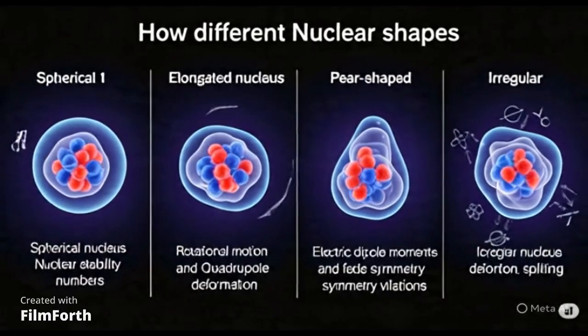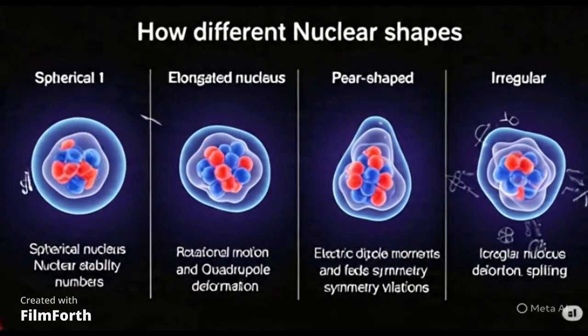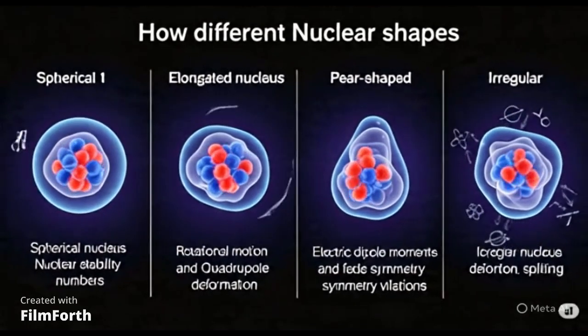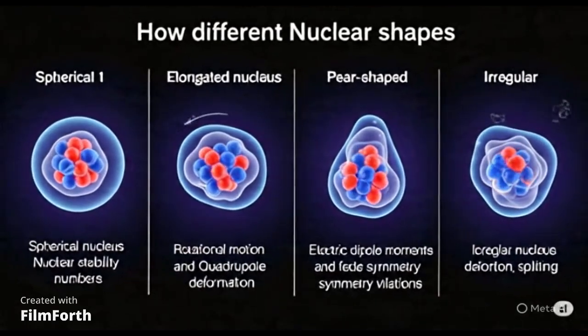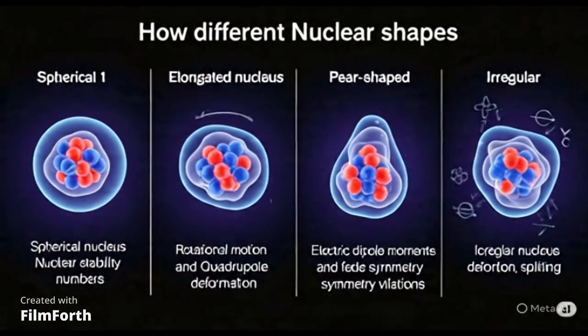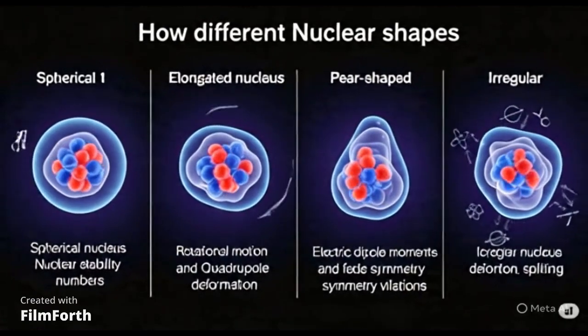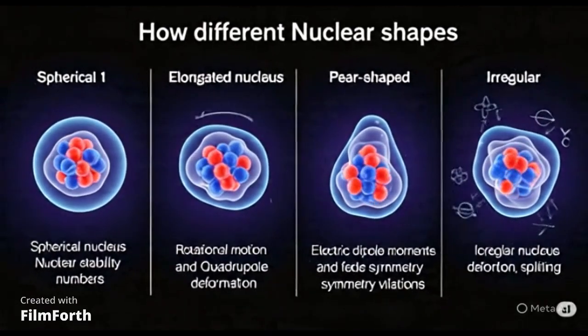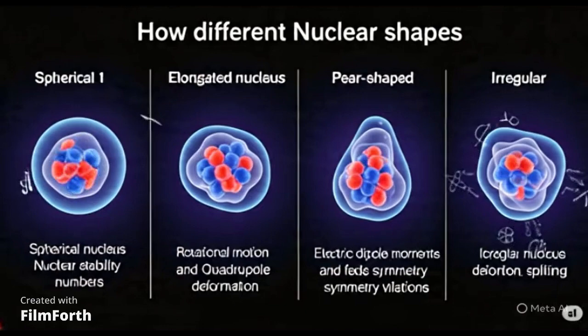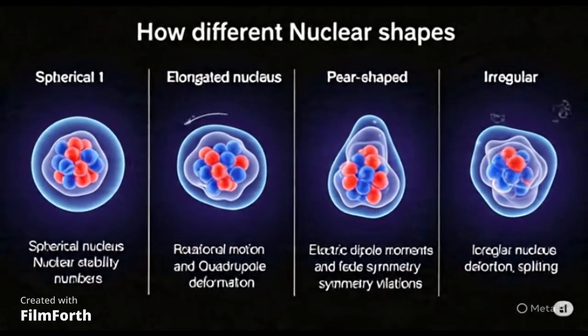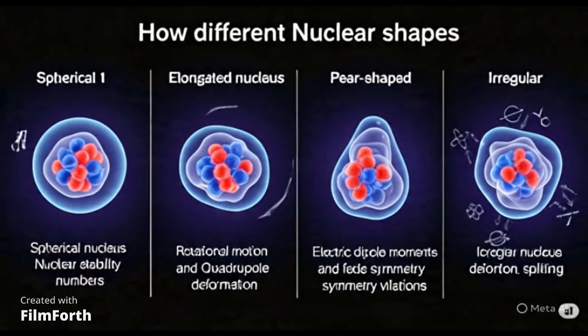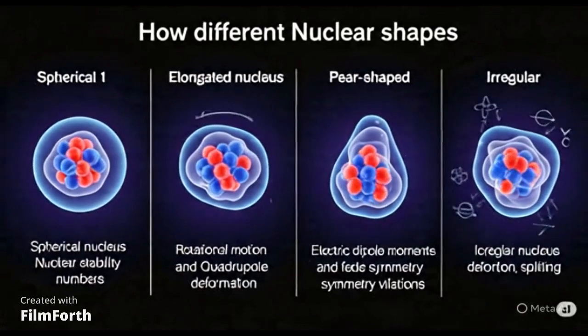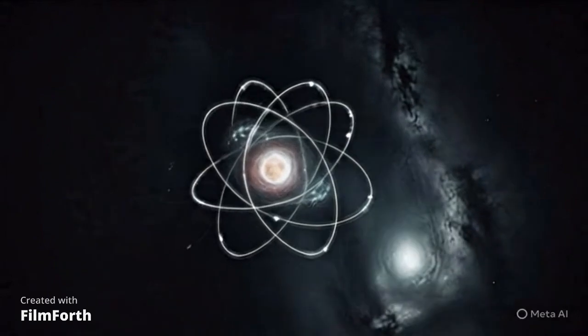Why does all this matter? Well, the shape of the nucleus has profound implications. It affects the stability of the atom, influencing whether it's likely to decay or remain intact. It plays a crucial role in nuclear reactions, determining how nuclei interact with each other. The unique shapes also leave their fingerprints on the energy levels and radiation emitted by the nucleus, which we can study through spectroscopy. And in the grand cosmic scheme, understanding nuclear shapes is even vital for unraveling how the heaviest elements in the universe were forged in the hearts of stars and during cataclysmic events.